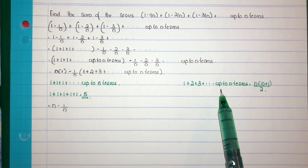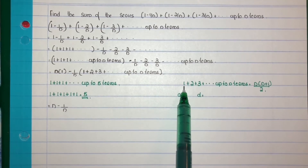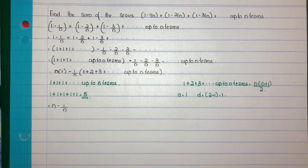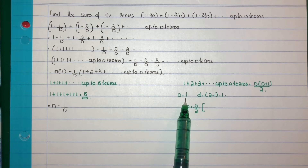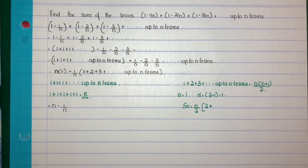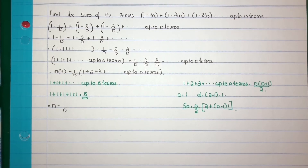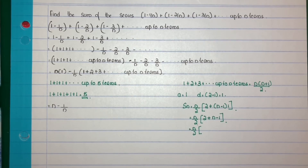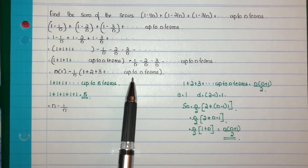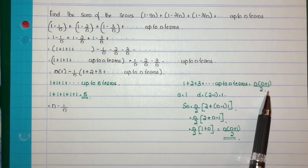We can find this out because 1, 2, 3 etc. up to n terms are n consecutive natural numbers — it is an AP because the common difference is the same. First term a equals 1, common difference d equals 2 minus 1, that is 1. Sum of n terms: Sn equals n/2 into (2a plus (n-1)d). With a equal to 1 and d equal to 1: n/2 into (2 plus n minus 1), which is n/2 into (n plus 1), same as n(n+1)/2. So 1 plus 2 plus 3 plus etc. up to n equals n(n+1)/2.